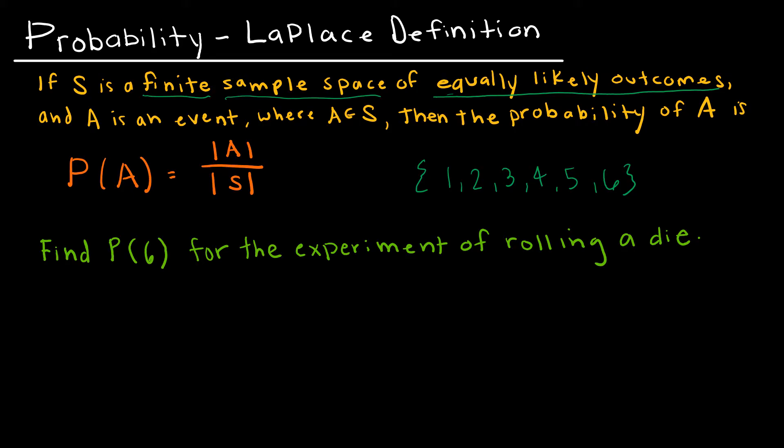A is an event where A is one of the events that belongs to the sample space. Then the probability of A is the number of elements A over the number of elements in S. For instance, if I'm looking at the probability of 6 for the experiment of rolling a die, again we write it P(6), and that tells us that 6 is the outcome we're looking for. 1 of my items is a 6 out of 6 total in the sample space.